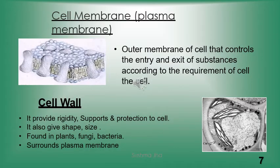Cell membrane, also known as plasma membrane, is the outer boundary of the cell that controls the entry and exit of substances as per the requirement of the cell. It is present in both plant cells and animal cells. Every organism's cell is covered with this protective membrane, which is made up of glycoprotein, glucose, protein, and fat.